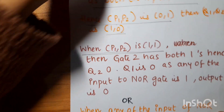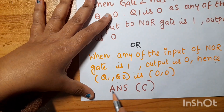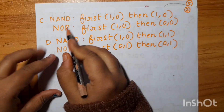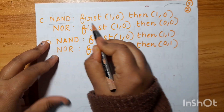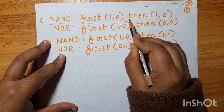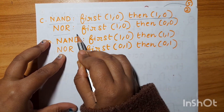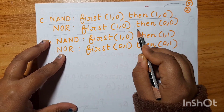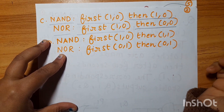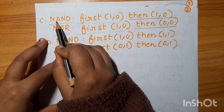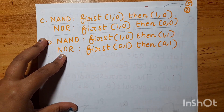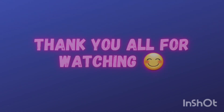Option C is the correct answer. For NAND: first 1,0 then 1,0. For NOR: first 1,0 then 0,0. This is the correct answer for NAND and NOR. The answer is C. Thank you.